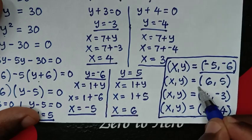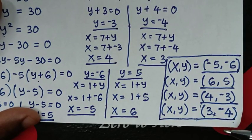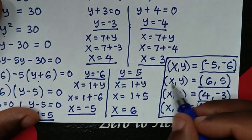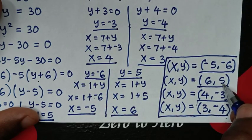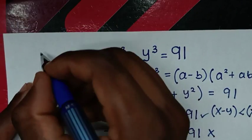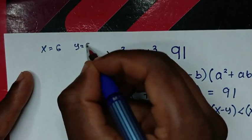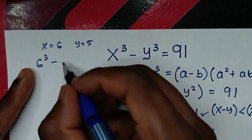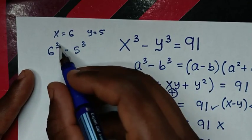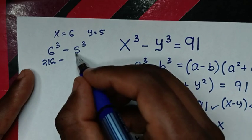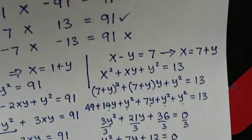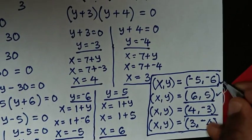To check if these solutions are correct, we can verify one or two of the answers. Let's check the positive answer x equals 6, y equals 5: substituting gives 6 power 3 minus 5 power 3 equals 216 minus 125 equals 91. So this solution is correct.